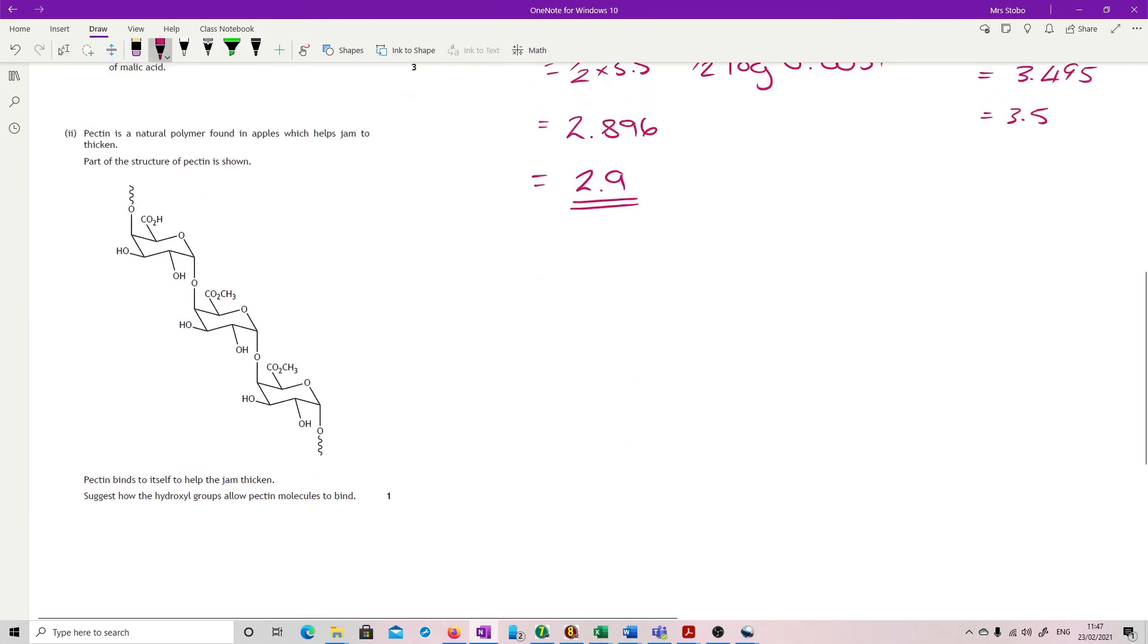Pectin is a natural polymer found in an atapulse, which helps jam to thicken. Part of the structure of pectin is shown. Pectin binds to itself to help the jam thicken. Suggest how the hydroxyl groups allow pectin to bind. It is actually as straightforward as you think.